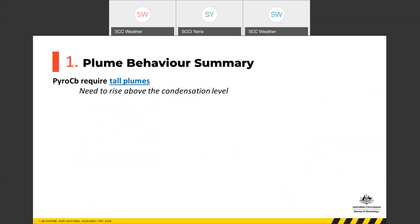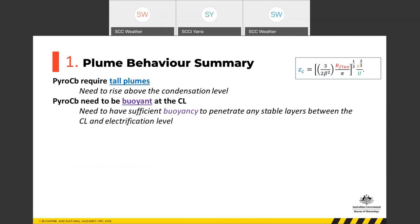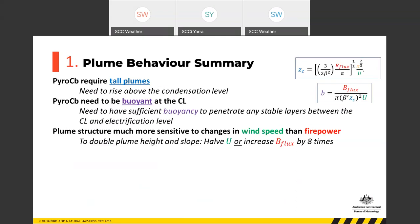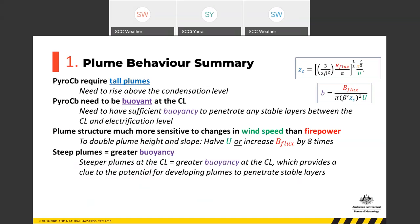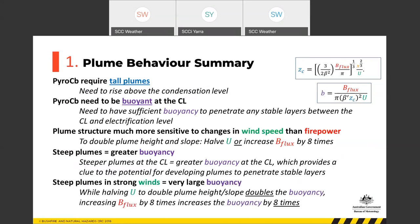To summarise: Pyro CB requires tall plumes to reach the condensation level, and needs sufficient buoyancy to penetrate stable layers between the condensation level and the electrification level. Plume structure is much more sensitive to changes in wind speed than fire power — halving the wind or increasing buoyancy flux eight-fold both double the plume height. The steeper the plume, the greater the buoyancy, which gives useful insight into whether a plume has the energy to penetrate the stable layer. Steep plumes in strong winds equal very large buoyancy.